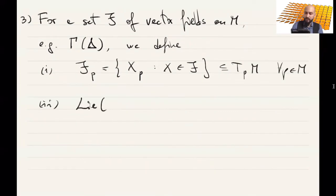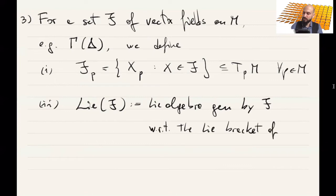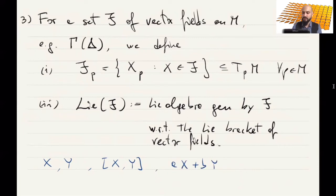And another definition is, we want to define the Lie algebra generated by F, the Lie algebra generated by F with respect to the Lie bracket of vector fields. What does it mean? More explicitly, if you have two vector fields in F, then you also consider the Lie bracket of them, the Lie bracket of vector fields. Of course, you also consider the linear combination of them. And then you iterate all this constructions.